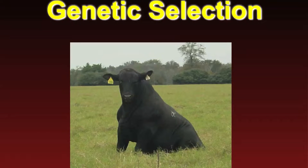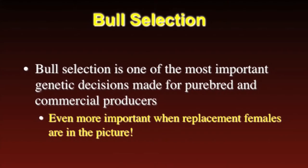Over the next few lectures we'll talk about genetic selection on both bulls and females, but we're going to focus a lot on bull selection. Bull selection is one of the most important genetic decisions made for purebred and commercial producers. It's even more important when replacement females are in the picture. Why is bull selection so important? Because he has a huge impact on the operation.